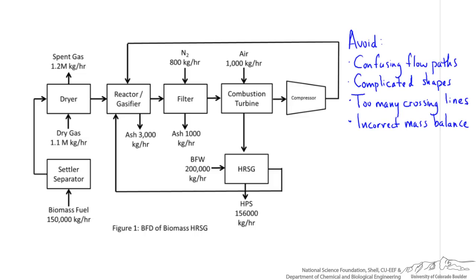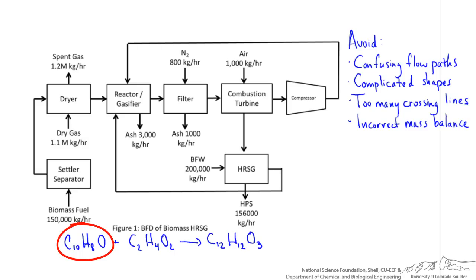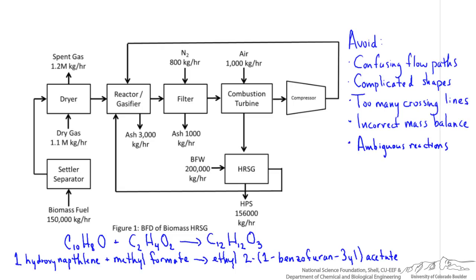Let's say there was a main reaction for this process — we'll use this example. One common mistake is not putting a chemical name under the reactants and products. Rather than guess what C10H8 is and wonder which isomer it might be, having a name under the reactants and products is a very helpful reminder. Remember that an operator, an electrical engineer, or a mechanical engineer may be reading this diagram and may not know these chemical formulas unless you name them.